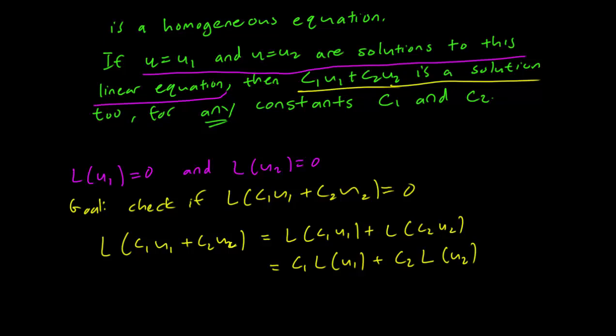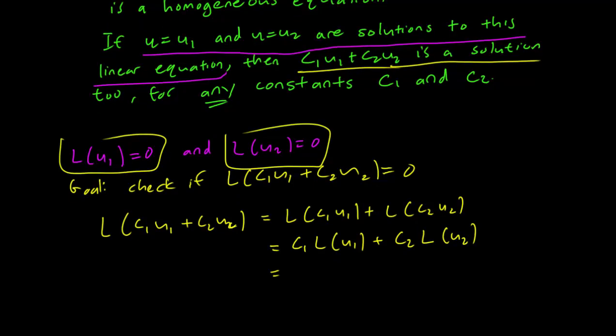However, since we know that L(u₁) = 0 and L(u₂) = 0, this implies that this is equal to C₁ times 0 plus C₂ times 0, which is of course equal to 0. We have shown that L(C₁u₁ + C₂u₂) = 0.